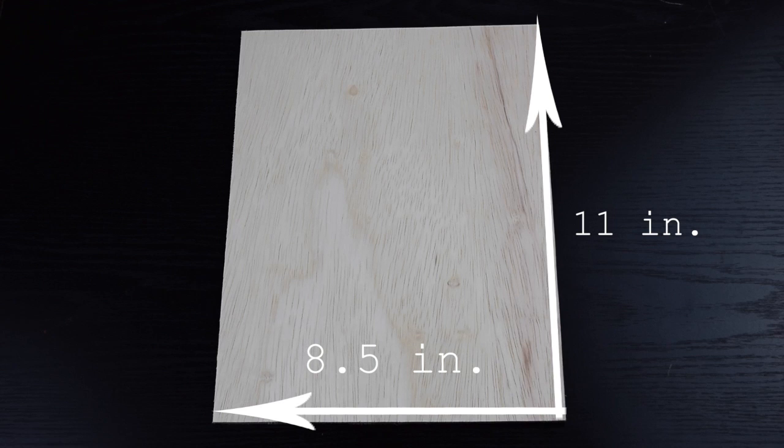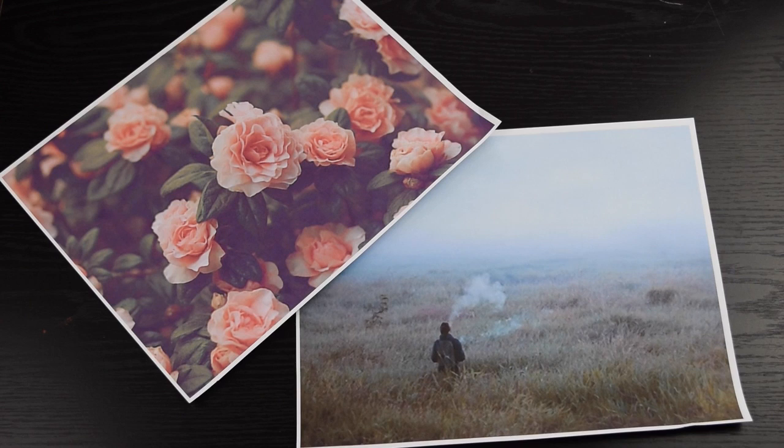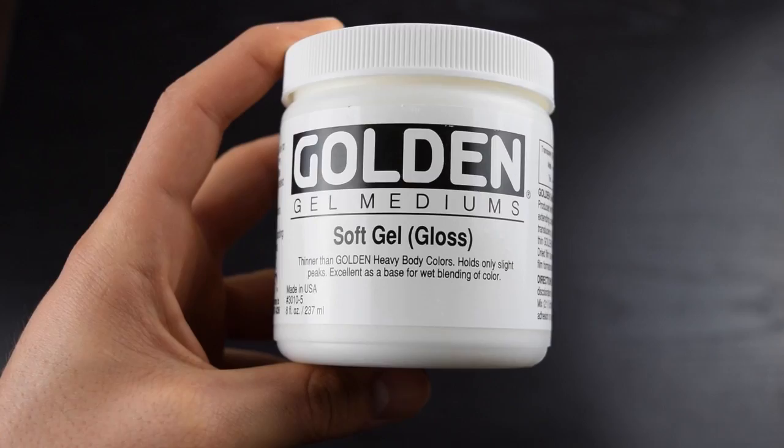For this you're going to need a piece of wood. I cut mine to the size of printer paper which is 8.5 by 11 inches, but any size will work. You'll also need whatever picture you want to print onto the wood. These were the two I chose and I just made them the size of printer paper.